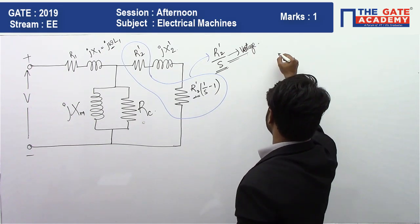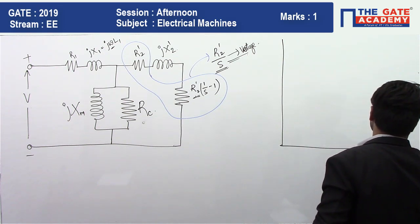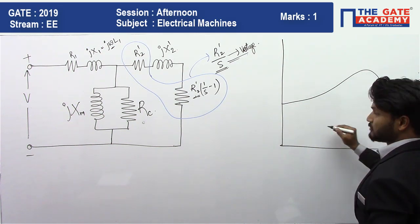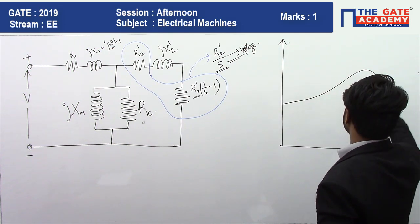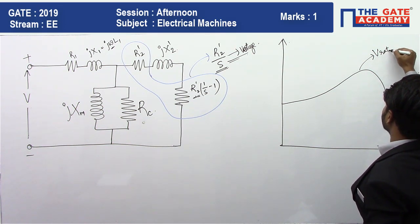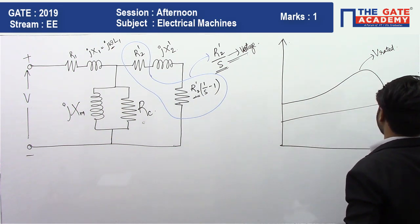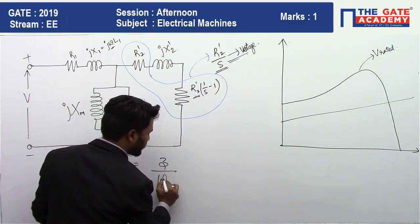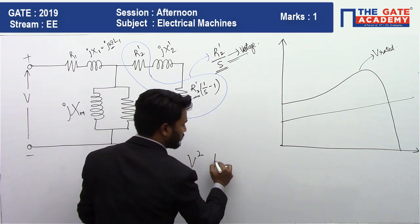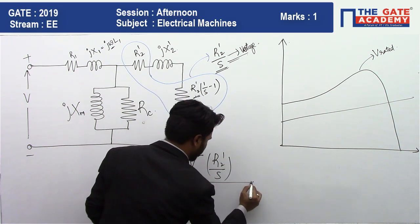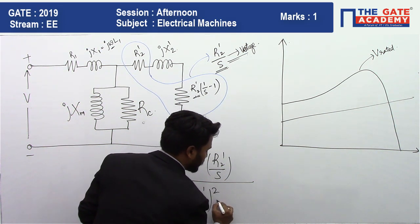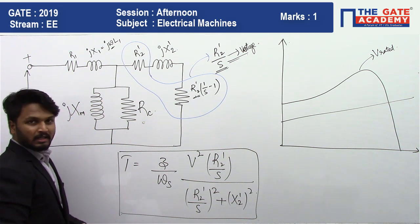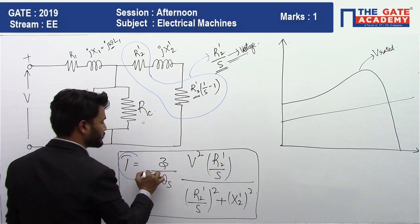The torque-speed characteristics of the induction machine at rated voltage look like a standard curve. The torque expression is: T = (3 / ωs) × V² × (R2 dash / S) / [(R2 dash / S)² + X2 dash²]. Therefore, torque is directly proportional to V squared.